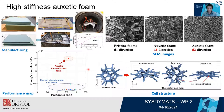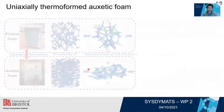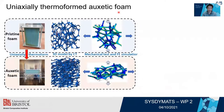However, it is too complicated to use an autoclave to make auxetic foams. So in the next research, we simplified the method to use a uniaxial compression thermoforming method to make auxetic foams. This method is very easily scaled up to make very large auxetic foam blocks.